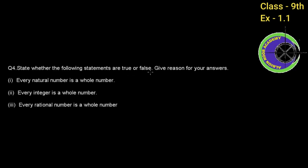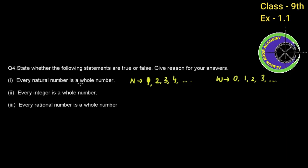Question number 4: State whether the following statements are true or false, and give reasons for your answer. First part: Every natural number is a whole number. Natural numbers are 1, 2, 3, 4 and so on. Whole numbers include 0 and all natural numbers. So every natural number is indeed a whole number. The answer is TRUE.